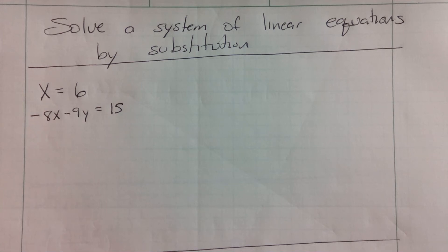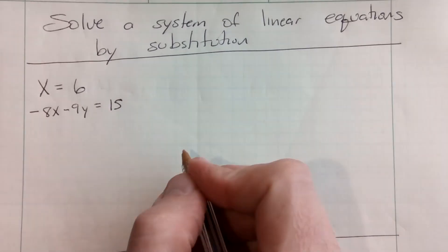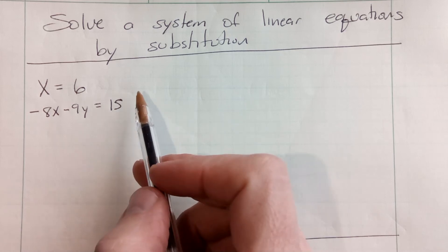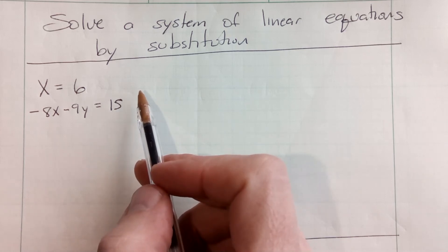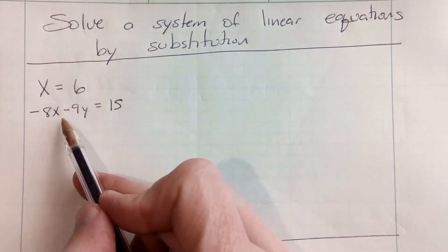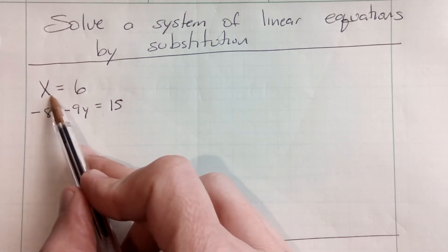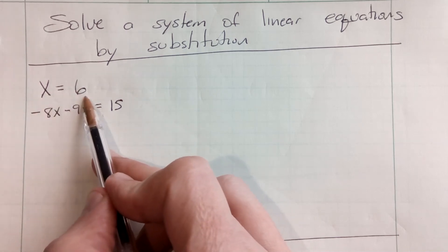Last lesson, we learned to solve a system of linear equations by graphing. Today, we're going to learn to do it by substitution. Because sometimes graphing isn't always the easiest thing to do, substitution always works — all we need to do is realize that we can replace an expression in one of the two equations with an expression from the other equation.